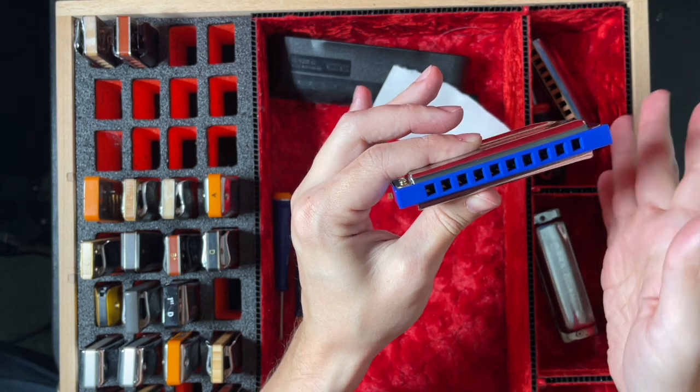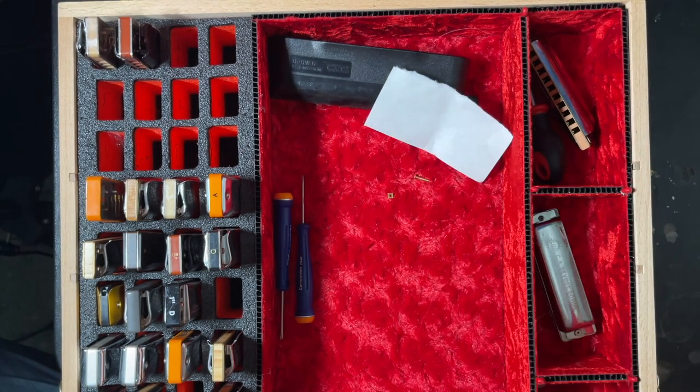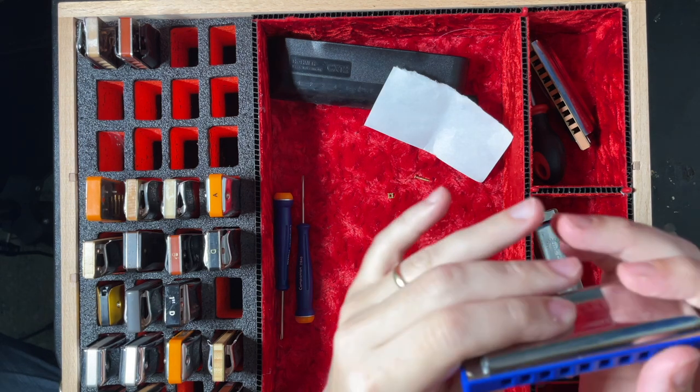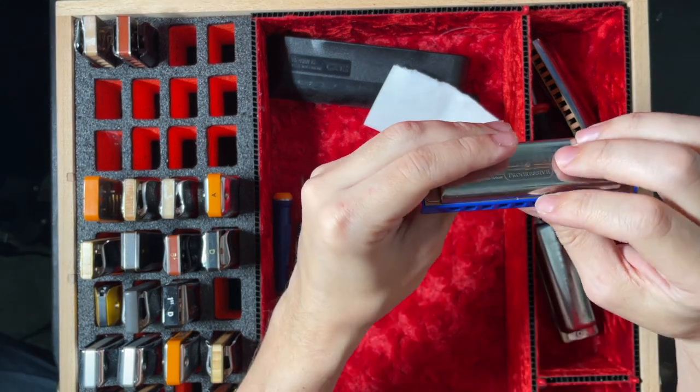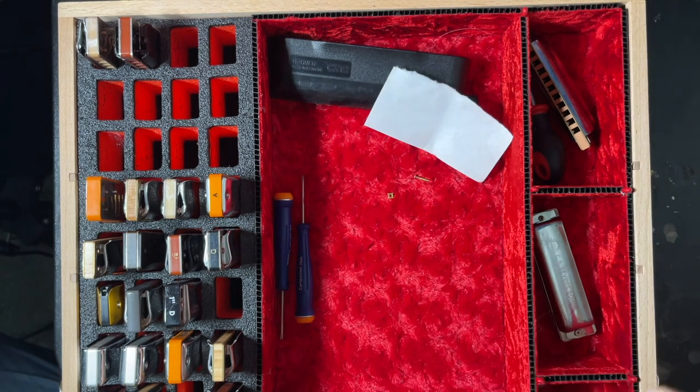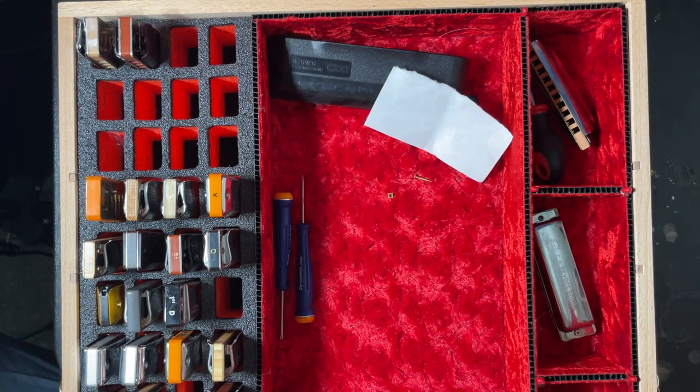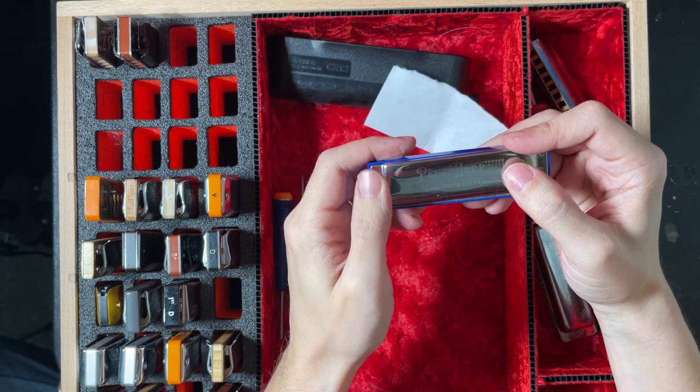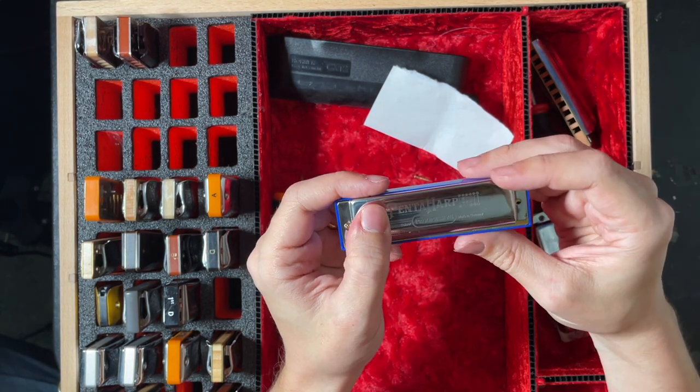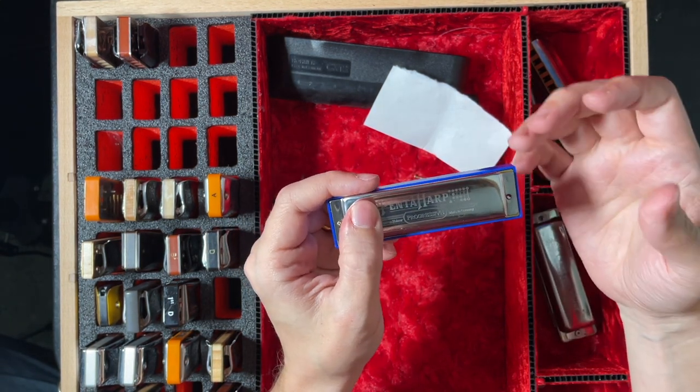Here's the one blow going to one draw with the bend in the middle. [plays] Not great. And here is a four blow going to four draw with the bend. [plays] Now you can hear there's a lot of air that sounds like it's leaking through and the bend doesn't really want to take.